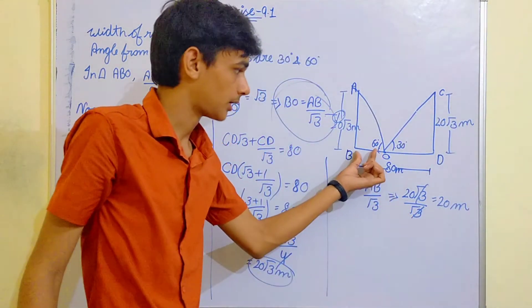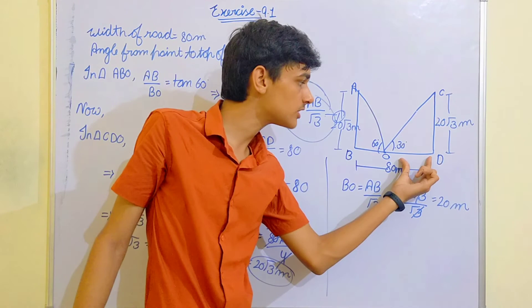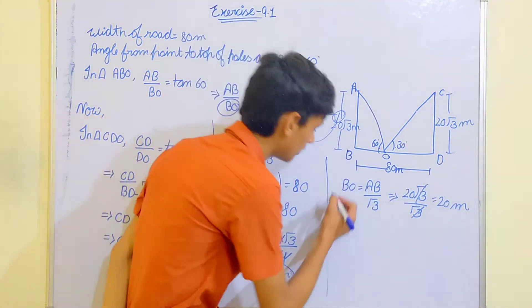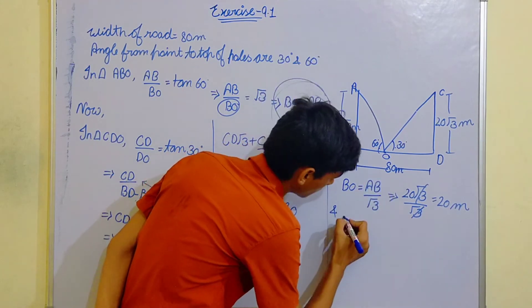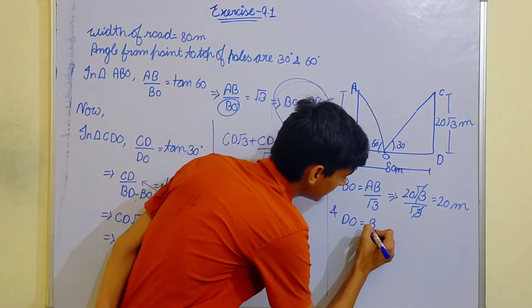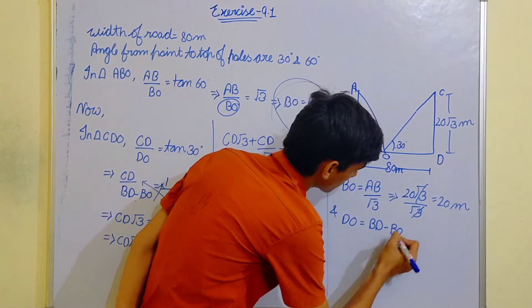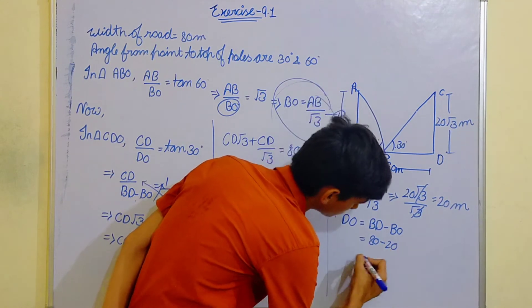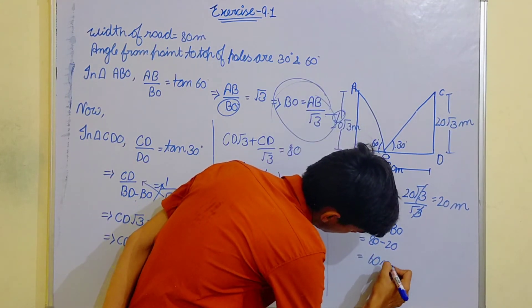So, 20 meter. Left portion is equal to 80 minus 20 is equal to 60. We find that out. And DO is equal to? DO will be BD minus BO. BD is 80. BO is 20. 60 meter.